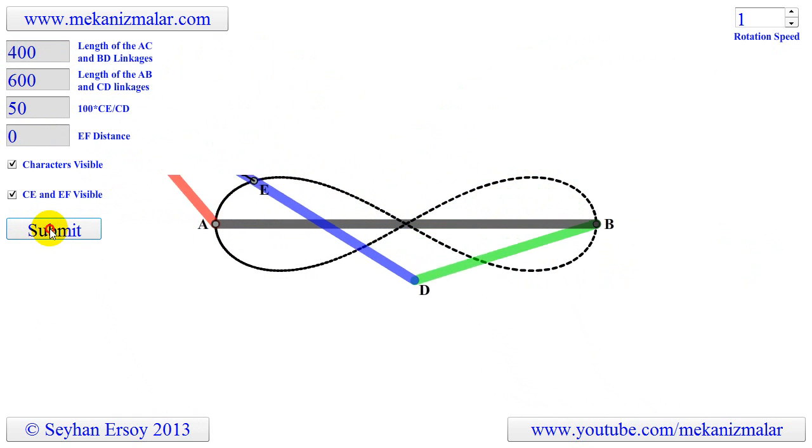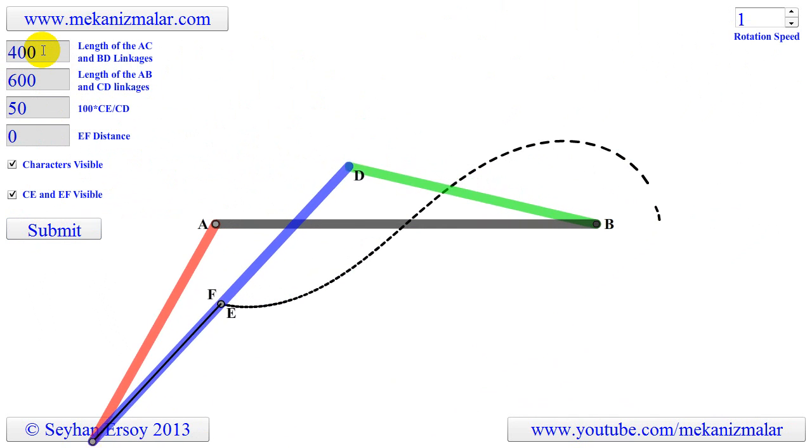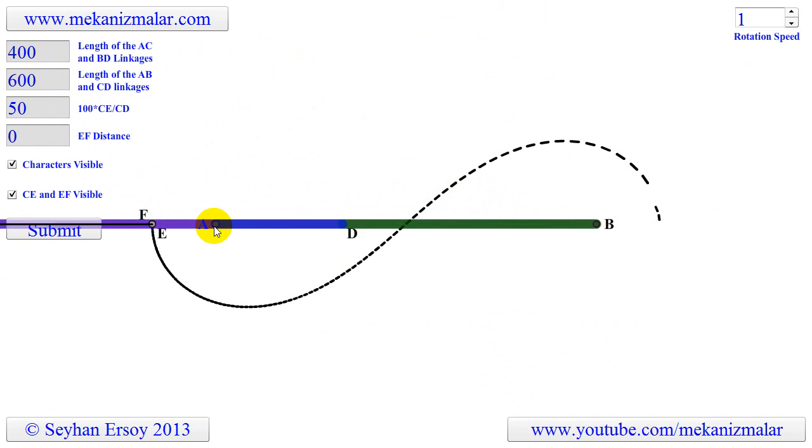However we can change that by changing either the AC or CD length. Now the coupler curves will not pass from A and B points.